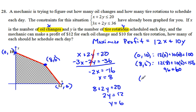My profit at 12, 0 is going to be 12 times 12 plus 10 times 0, and that's 144.